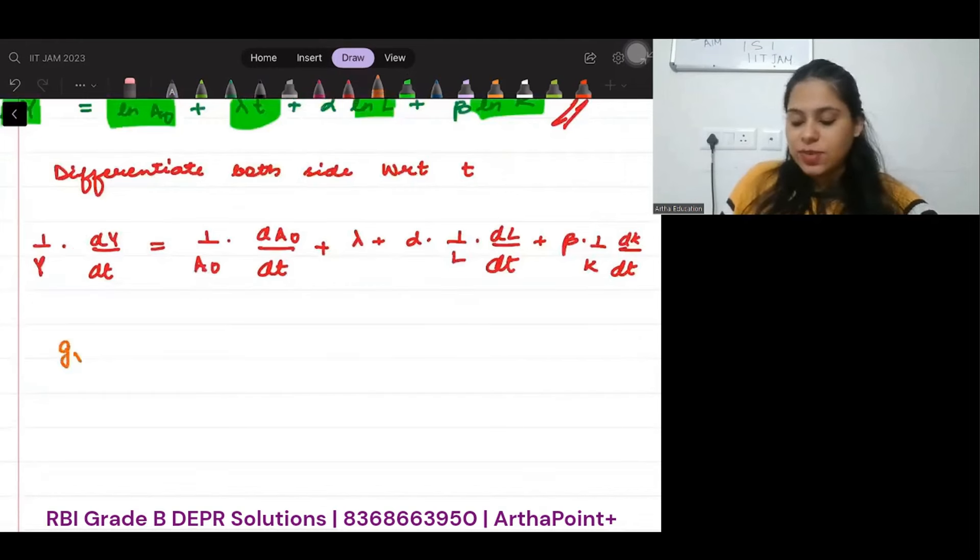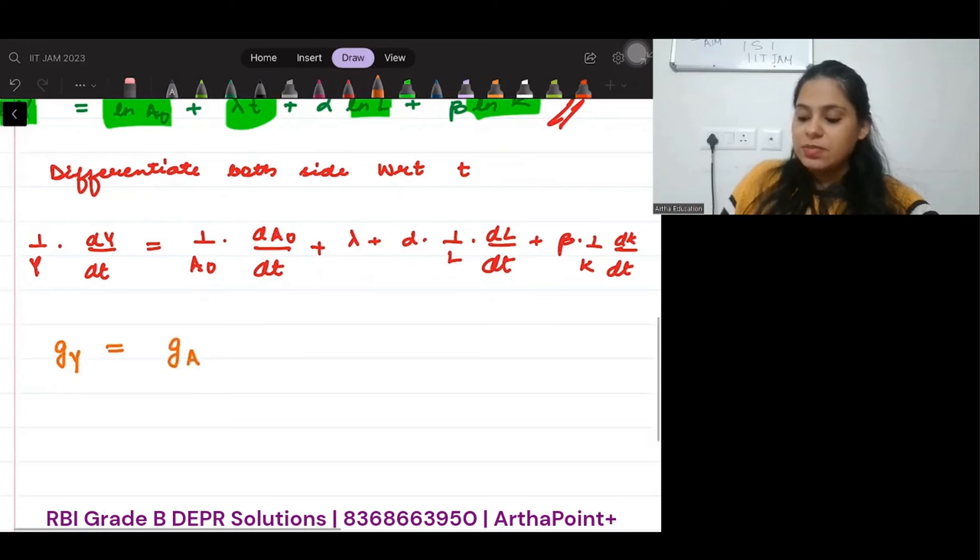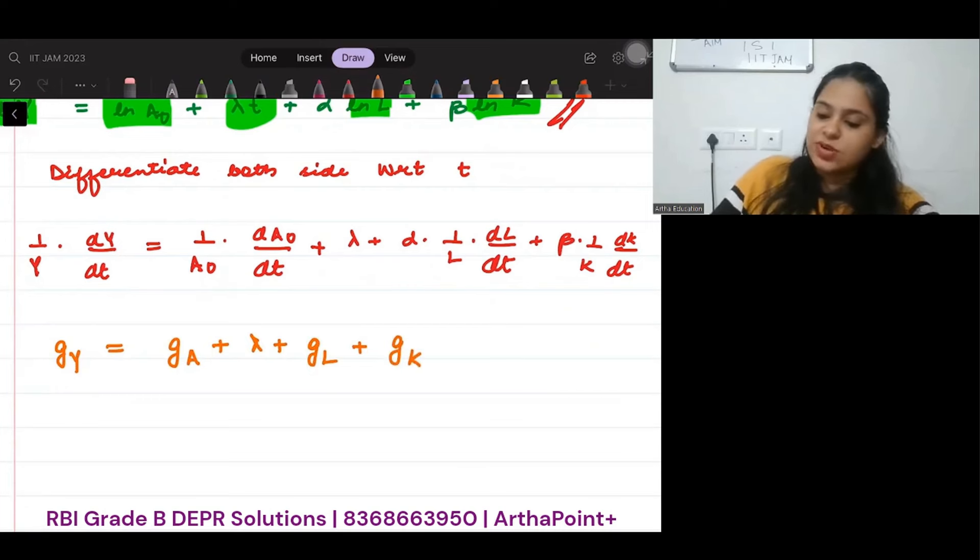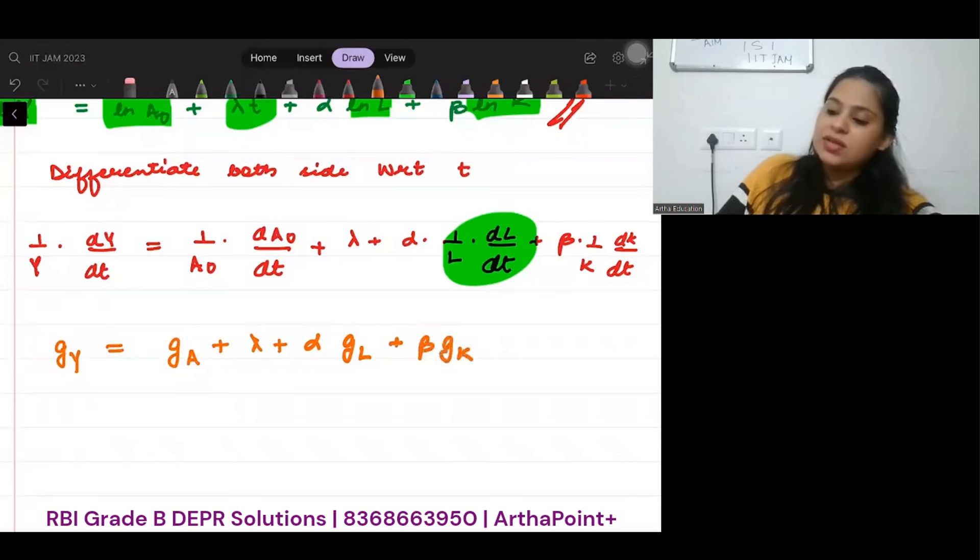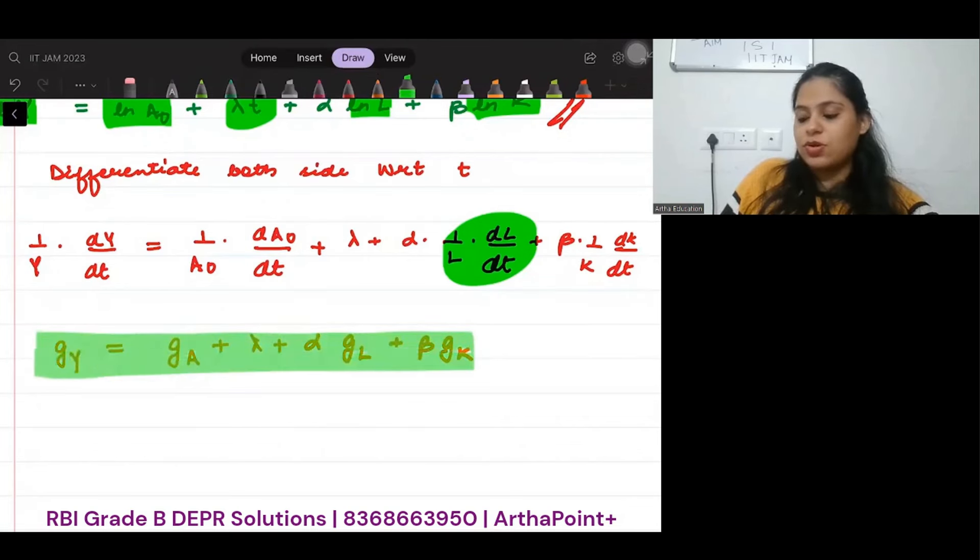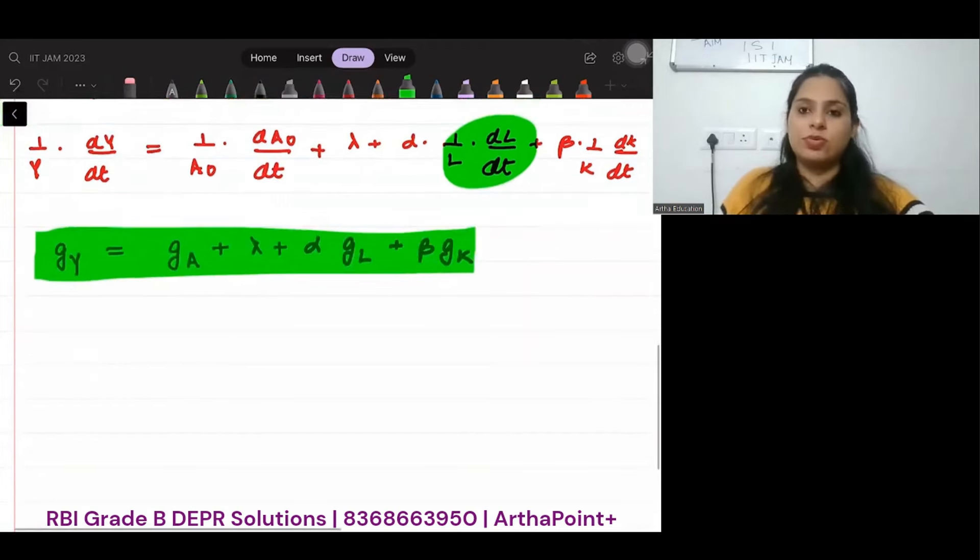So this is nothing but the growth rate of Y. This is equal to growth rate of A plus λ plus α growth rate of L plus β growth rate of K. This becomes the growth rate of your output, and this is how you can find the growth rate of output.